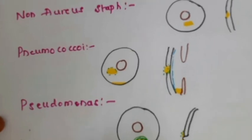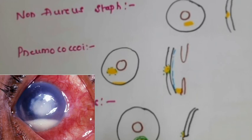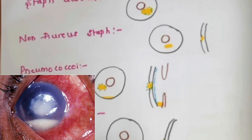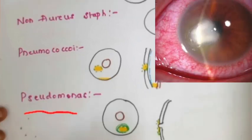The pneumococcal corneal ulcer usually follows corneal trauma or can be associated with dacryocystitis or bleb infection. The ulcer is usually acute in onset, purulent, and rapidly progressive with a deep stromal abscess, as seen in this cross-section. There is a severe AC reaction to the extent of forming hypopyon, a retrocorneal membrane, and perforation is common in pneumococcal corneal ulcers.